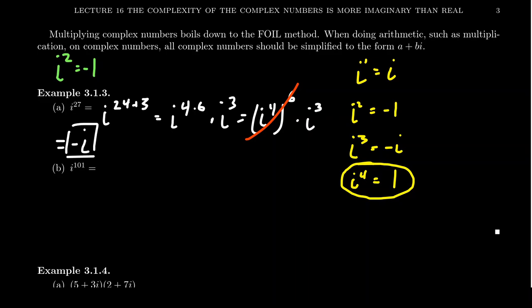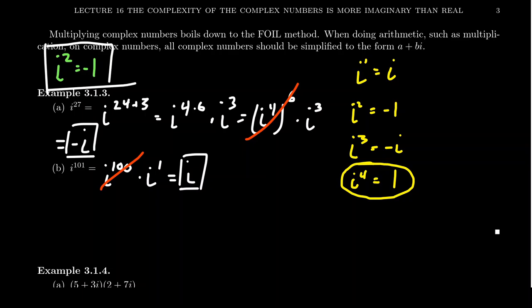So i to the 27th power is negative i. What about i to the 101st power? That's a lot, but it's not hard when it comes to powers of i. We recognize that 100 is a multiple of 4 — it's 4 times 25 — so we can ignore it. That just leaves i to the first, meaning i to the 101st equals i. If we know that, we can handle any power of i, and hence any multiplication involving i. In practice, we'll mostly just see i squared equals negative one, and everything derives from that observation.